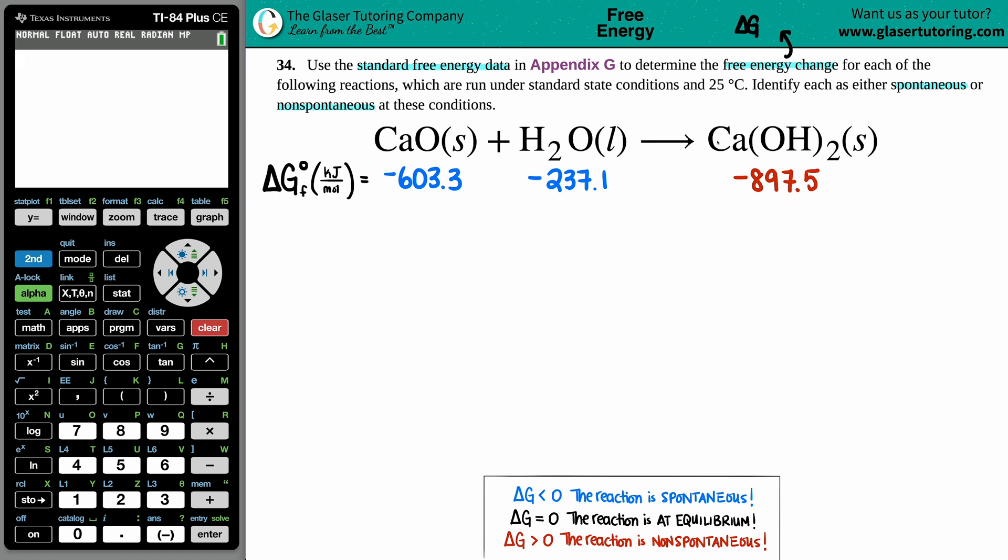A change is always that delta, the triangle. Since we're using standard values from the back of the textbook, I'm solving for delta G naught. Anytime you see that naught, that means we're using textbook values, standard values.